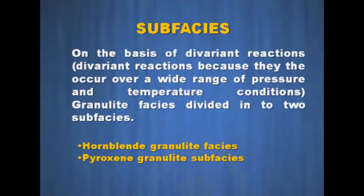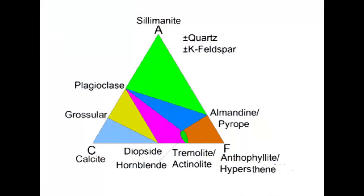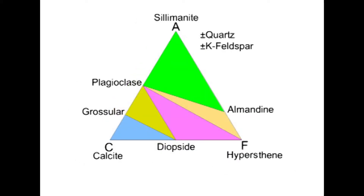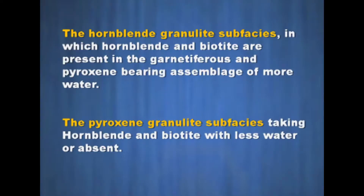On the basis of divariant reactions, because they occur over a wide range of pressure and temperature conditions, granulite facies is divided into two sub-facies. First: hornblende granulite, in which hornblende and biotite are present in the garnetiferous and pyroxene-bearing assemblages with more water. Second: the pyroxene granulite sub-facies, taking hornblende and biotite with less water or absent.